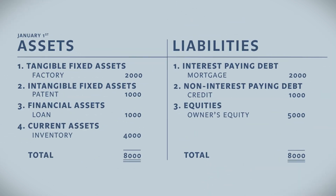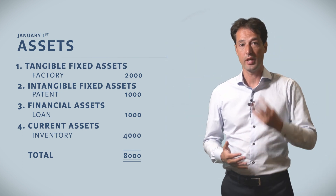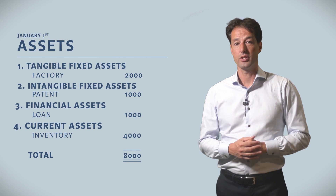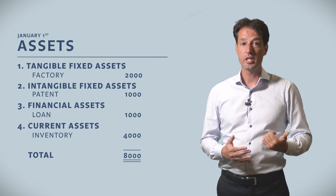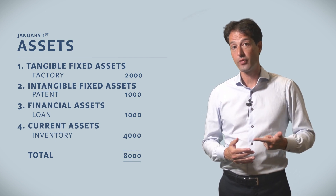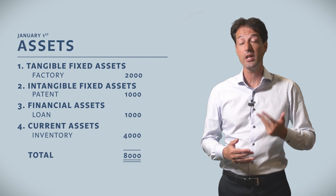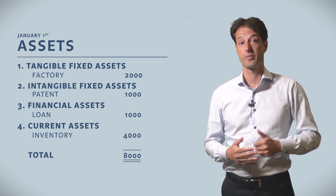The left hand side are the assets. The right hand side is what we call the liabilities. On the left hand side we have four categories: tangible fixed assets, intangible fixed assets, financial assets, and current assets.